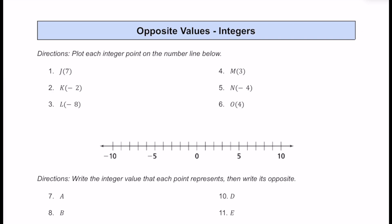For this first section, we're going to go ahead and plot each of these integer points on the number line below. For number one, we have j, and it's located at positive 7. So if this is 5 over here and this is 10, it's going to go between 5 and 10. Each tick mark looks like it's going to be 1, so 7 is going to be right over here. Let's put a dot and then put the letter j.